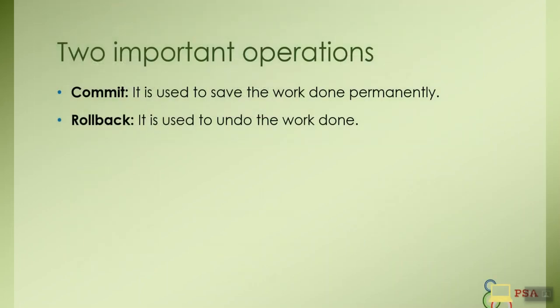To solve this problem there are two important operations. First is commit, it is used to save the work done permanently that is when all the instructions of transaction are executed properly changes will be updated to the database. Next is rollback, it is used to undo the work that means if the transaction was not completed properly all the work done up till now will be undone.